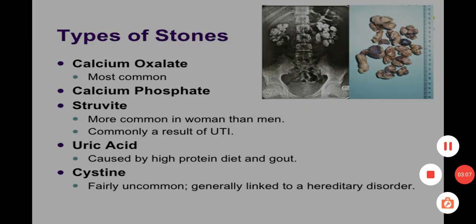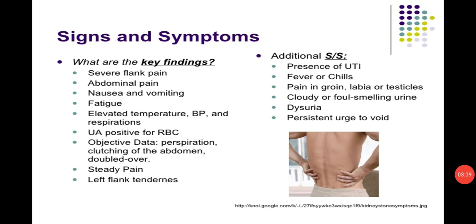Now we will see the symptoms and signs of kidney stones. These include severe flank pain — the flank is the site of a person's body between the ribs and the hip — abdominal pain, nausea and vomiting, fatigue, elevated temperature, and elevated respirations. Objective data includes perspiration, clutching of the abdomen, doubling over, and steady pain especially in the left flank tenderness.